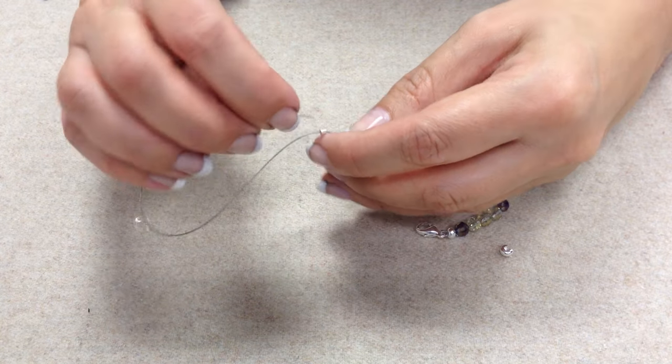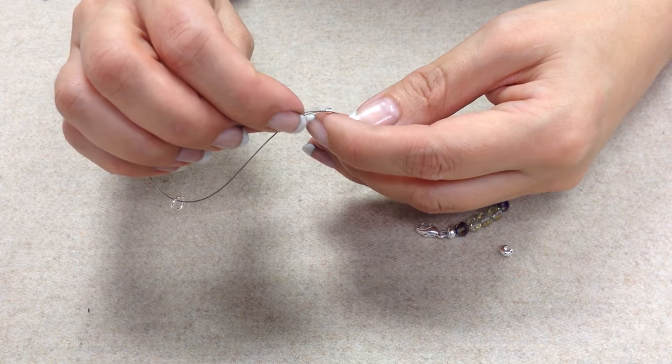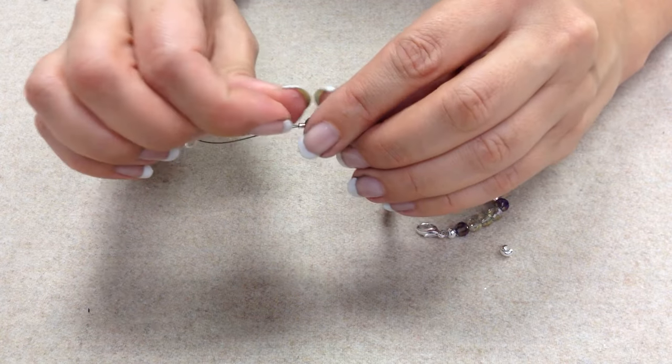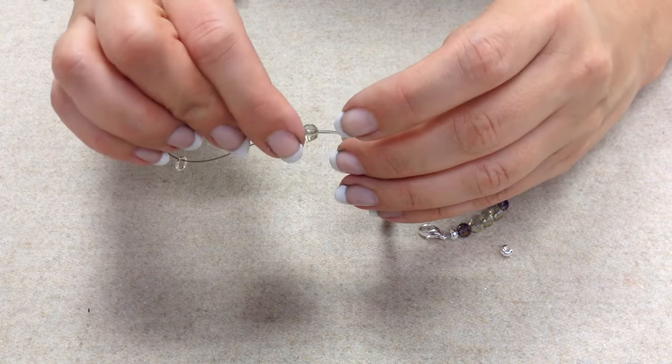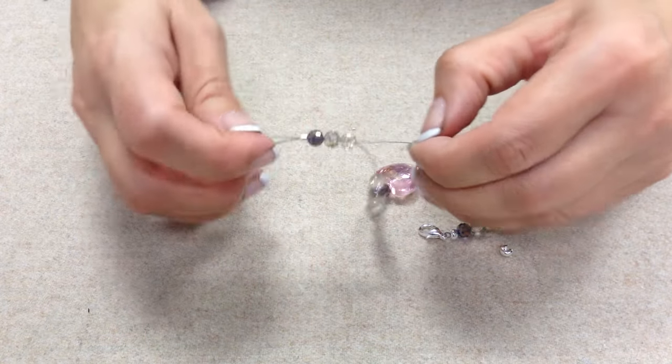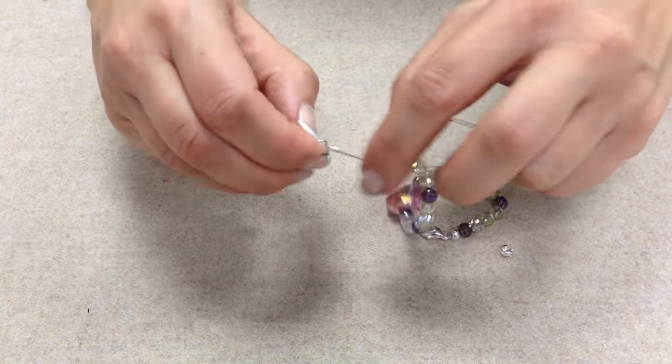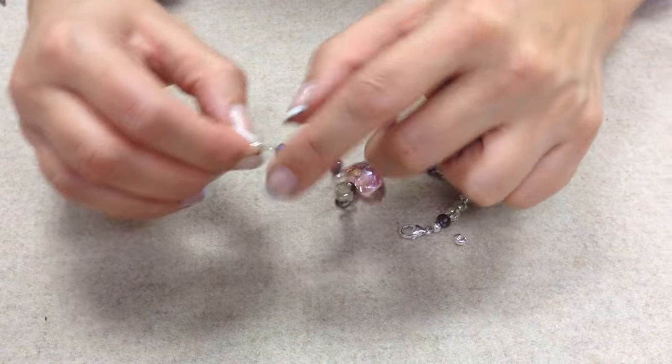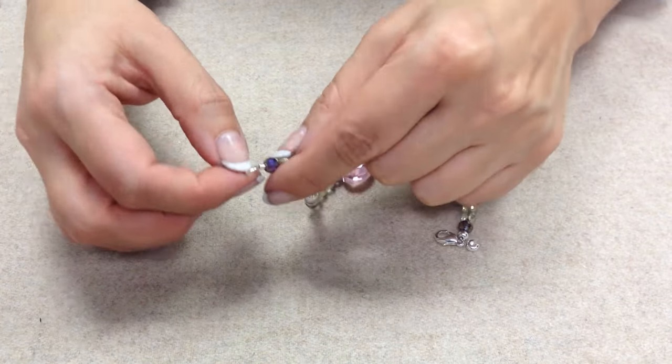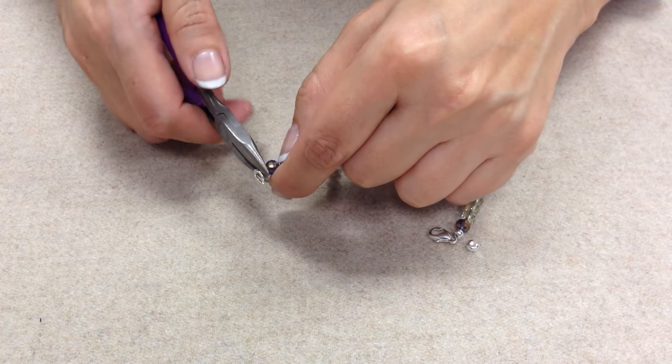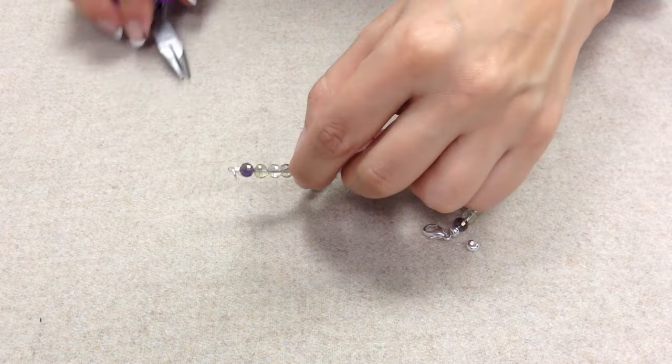Another way of finishing a necklace or bracelet is to take some of the excess beading wire and thread it through two or three of the beads in your piece of jewelry. Some people prefer this method. The bracelet or necklace will be secure whether you cut the beading wire at the crimp tube or pass it through a few beads.